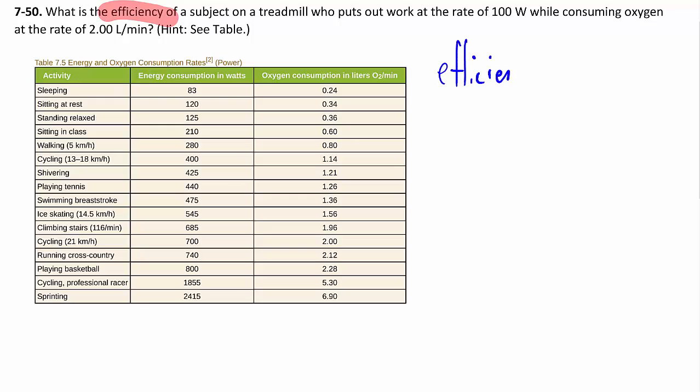In terms of physics, the efficiency of some kind of action is equal to the amount of work that you got out - and the key word here is useful work that you get out, technically you get all your energy back but it's not all useful - divided by how much energy you invested or put in in the first place.